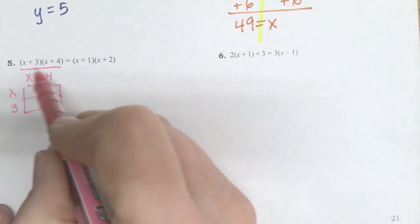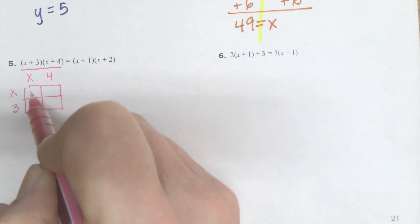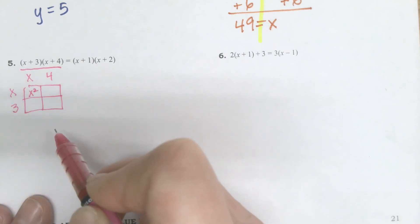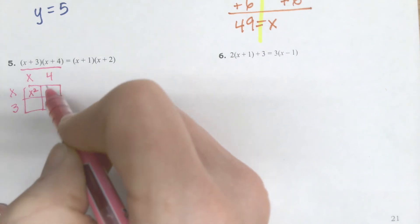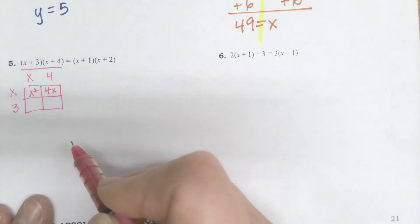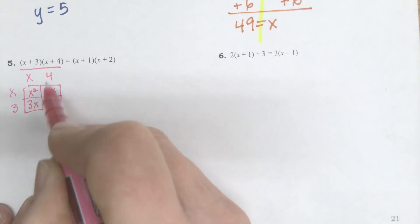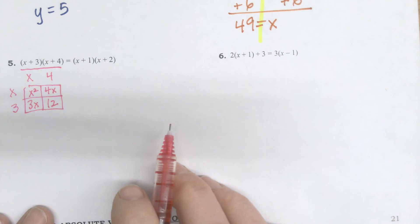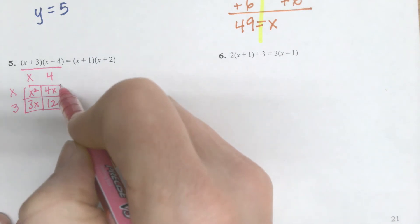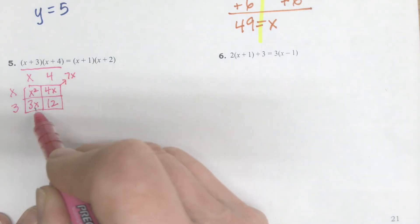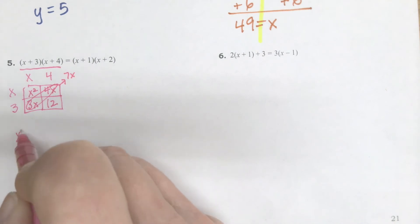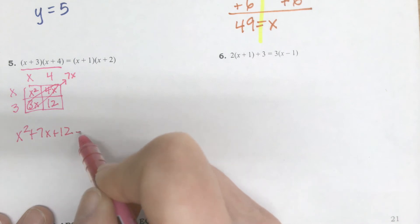So I multiply everything, not add. Multiply. x times x is x squared. x times 4 is 4x. 3 times x is 3x. 3 times 4 is 12. When I add these two guys together, I get 7x, 3x plus 4x. That's this combination here. And so now when I write this, it's x squared plus 7x plus 12. Equals.